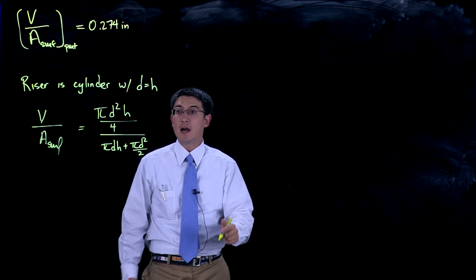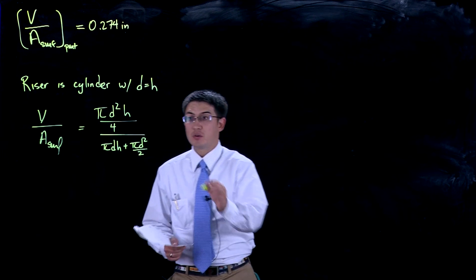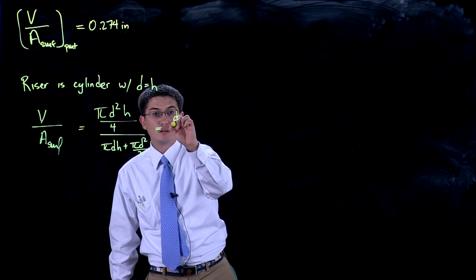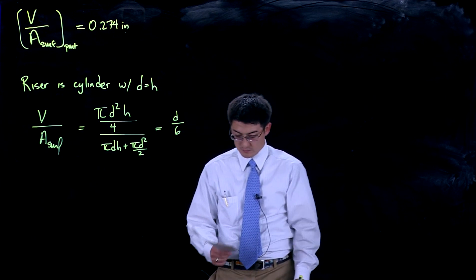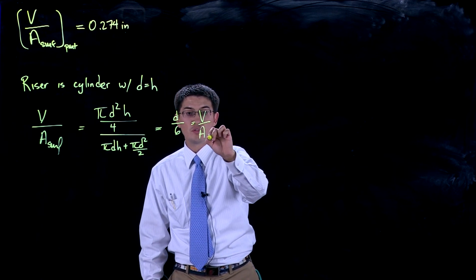Now we know that d is equal to h, so this simplifies to d over 6 for volume over surface area.